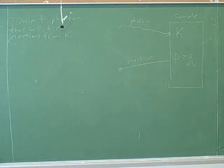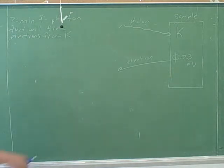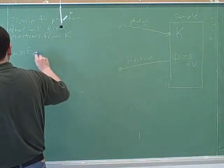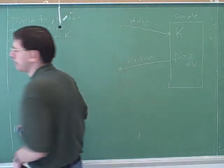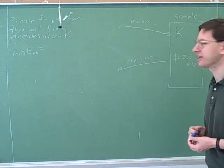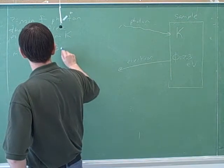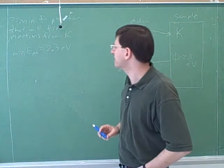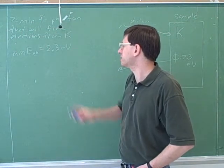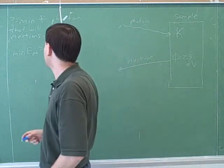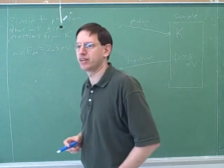Let's try to get away from just plugging into the formulas and use a little more common sense. So what is the minimum energy photon that would free an electron here? The minimum energy photon that would free an electron is 2.3 electron volts. How can we figure out the frequency of this photon?